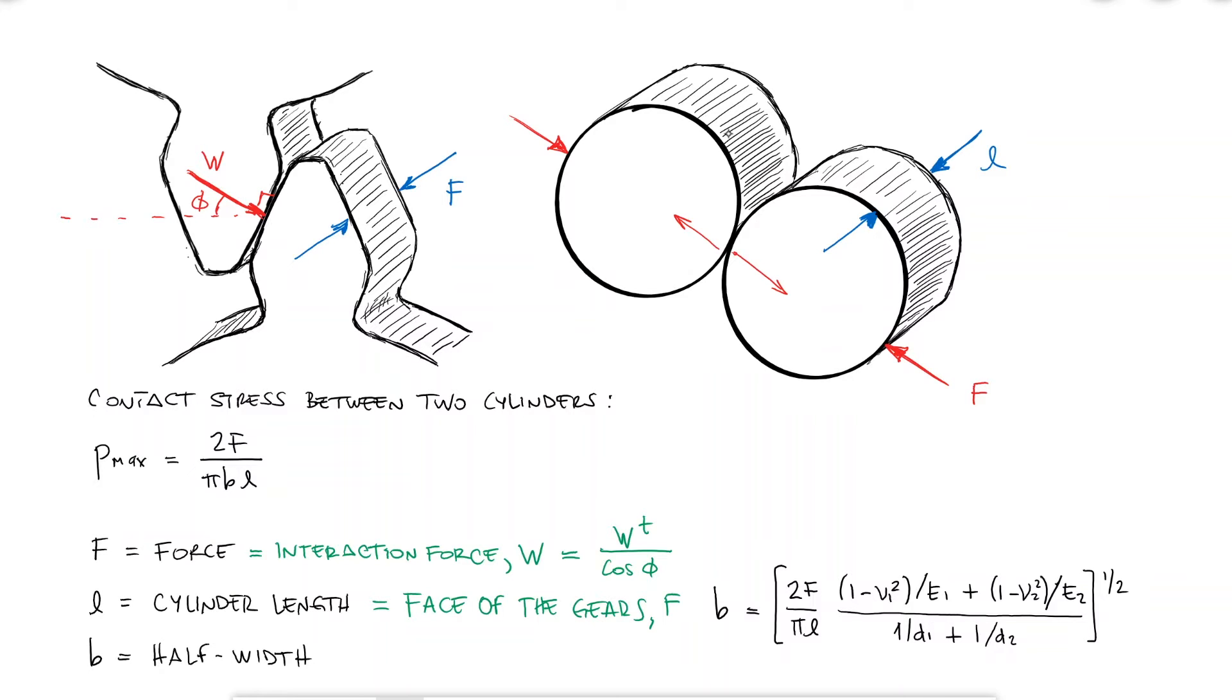The next variable is the diameter, which is just two times the radius. Not the radius of the gear, of course, but the radius of curvature of the teeth at the point of contact.